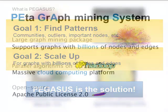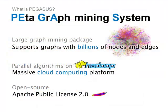Pegasus stands for Peta Graph Mining System. It is an open source data mining package designed to support the analysis of graphs with billions of nodes and edges. It offers parallel graph mining algorithms that run on top of Hadoop, an open source implementation of the MapReduce framework.